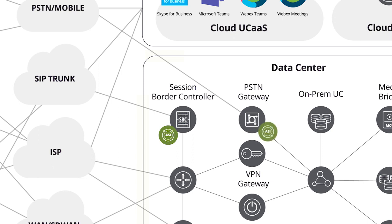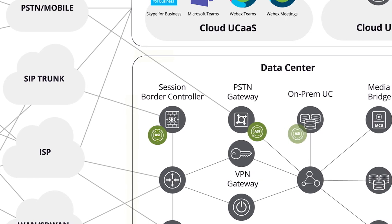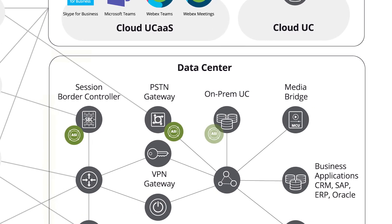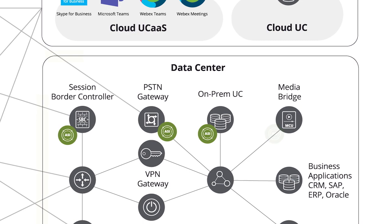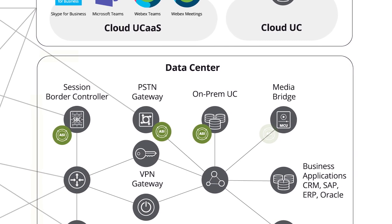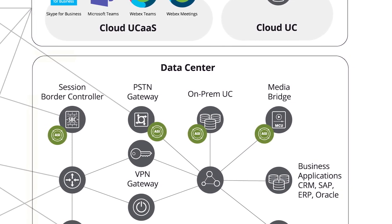At the voice gateway — the entry and exit point for communication to the PSTN or mobile users — this determines if it's your issue or to do with the end users. Visibility at the on-prem UC equipment, specifically call managers and front-end servers where the key signaling setup originates, provides information to determine the reasons for call setup problems and call drops. Instrumenting at media bridges where voice and video conferences are controlled provides a view on the quality from multiple users attending conference calls.